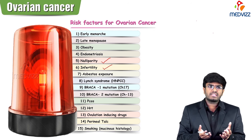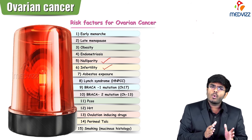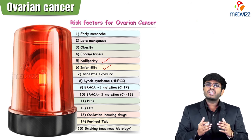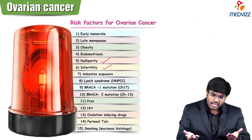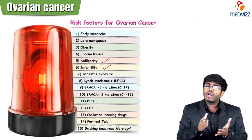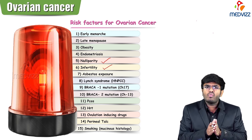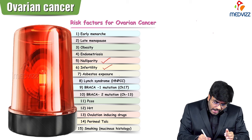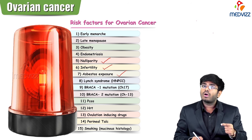Nulliparity means no pregnancy. Having a pregnancy gives almost one and a half years' break from menstrual cycles due to gestational amenorrhea and lactational amenorrhea. If she is nulliparous or infertile, she doesn't get that break, so ovaries are continuously working. Continuous ovulation and continuous stress are not good for the ovaries.